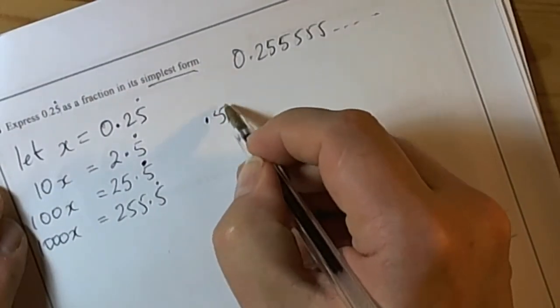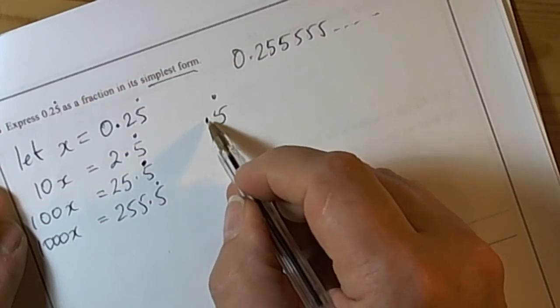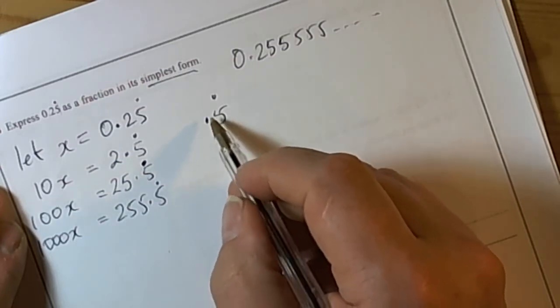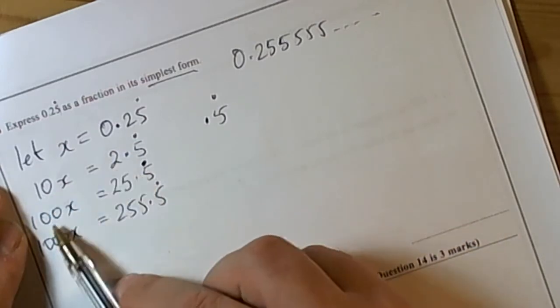to get the .5 recurring next to the decimal point, to the right of it, in two equations so that we can do a subtraction and cancel it out. The classic way is to go through doing 10x,